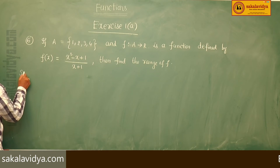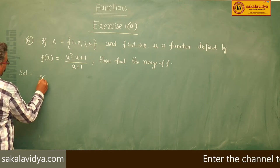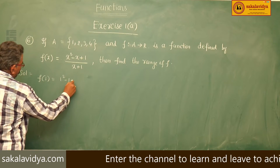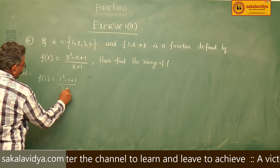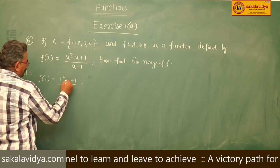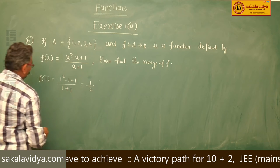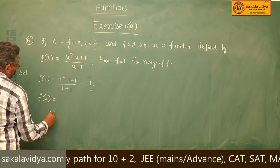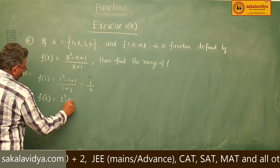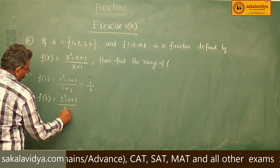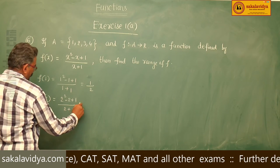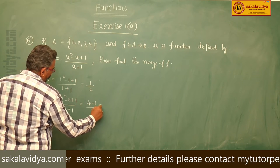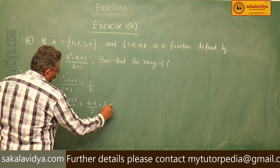First, let us find f(1): that is (1² - 1 + 1) / (1 + 1). Here, 1 and 1 cancel, giving 1/2. Next, f(2) = (2² - 2 + 1) / (2 + 1) = (4 - 1) / 3 = 3/3, which equals 1.